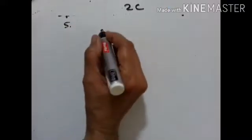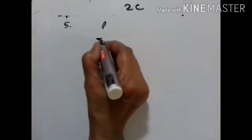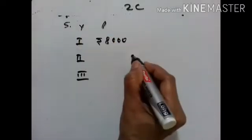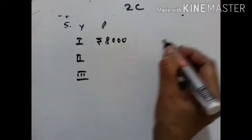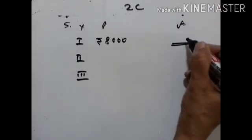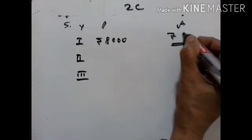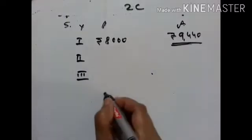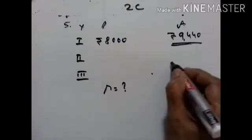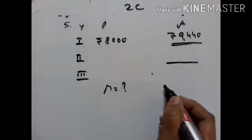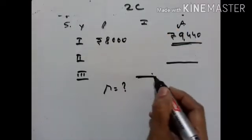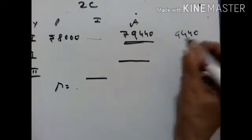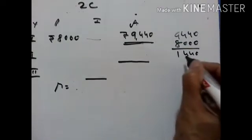5th problem. Mohit invests Rs. 8000 — principal is equal to Rs. 8000 — for 3 years at a certain rate of interest compounded annually. At the end of 1 year it amounts to Rs. 9440. Calculate the rate of interest per annum, and the amount at the end of the 2nd year, and the interest accrued in the 3rd year. Now this interest is equal to amount minus principal: 9440 minus 8000 is equal to Rs. 1440.